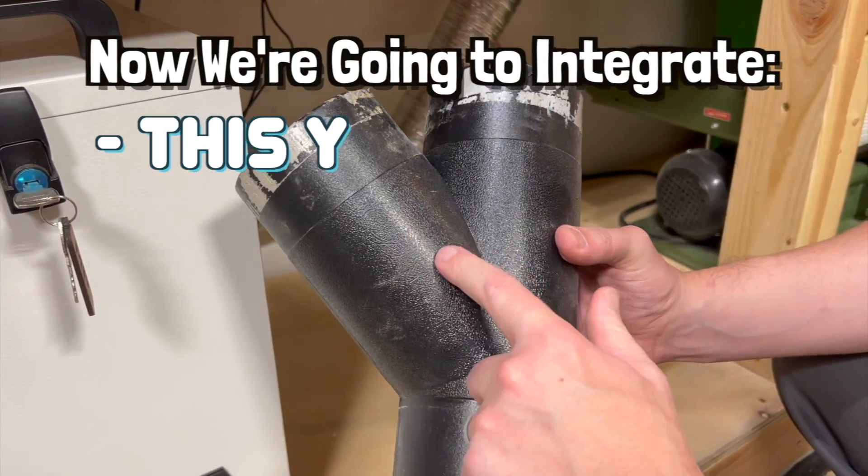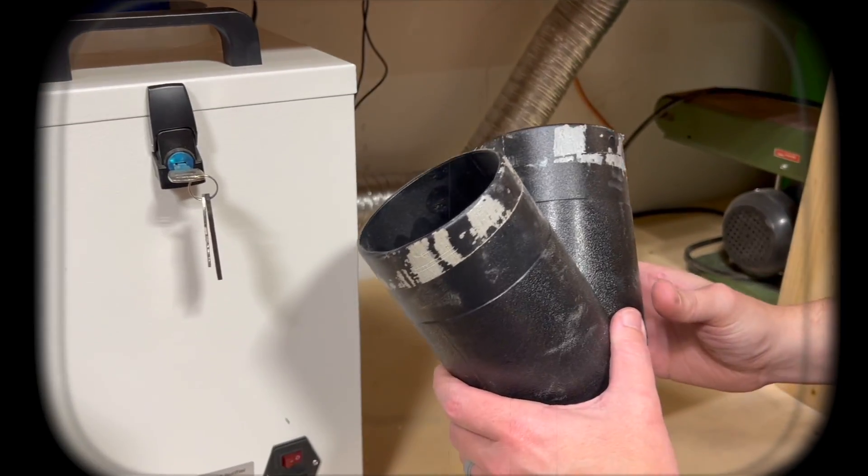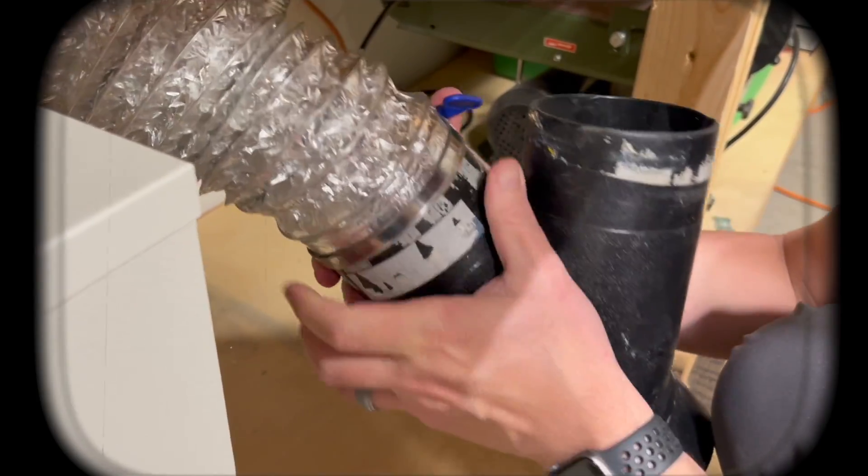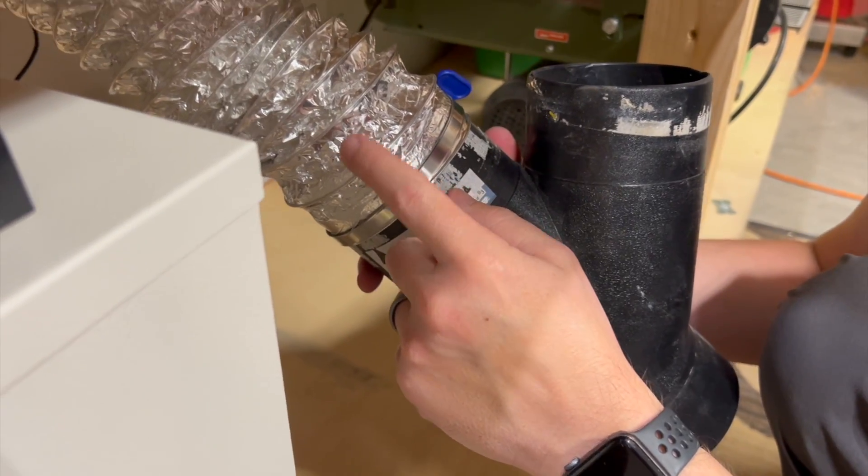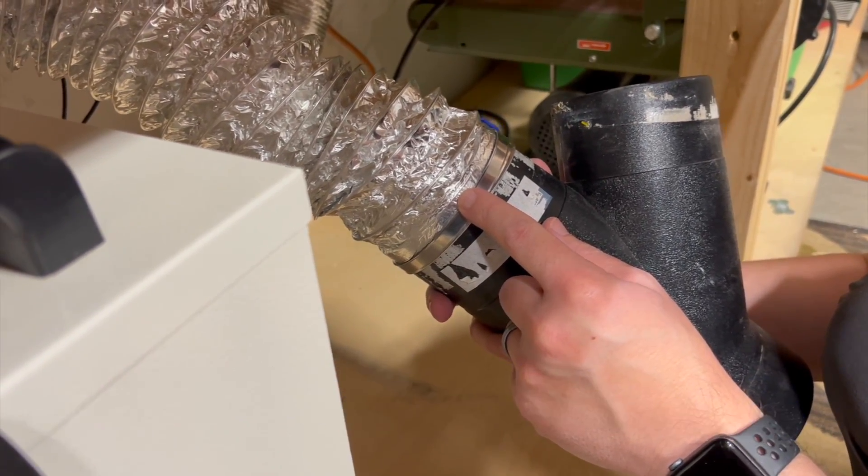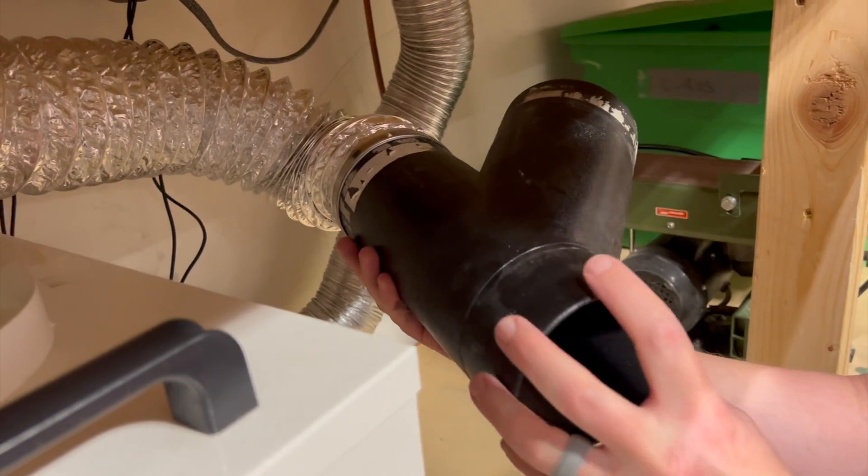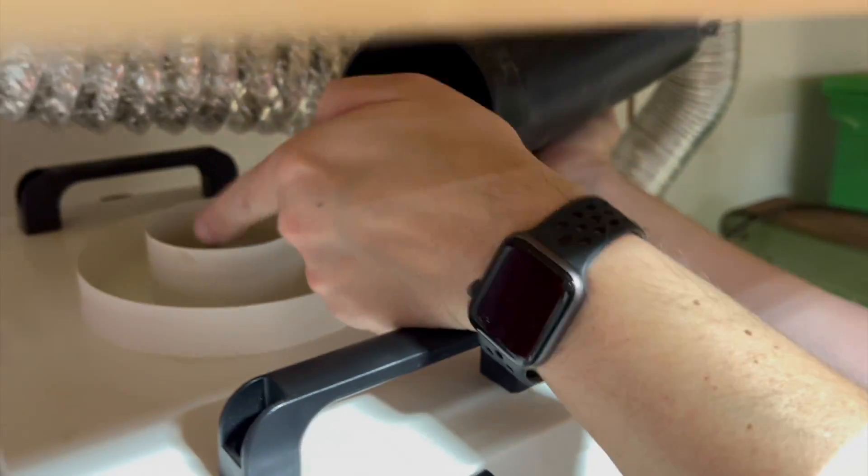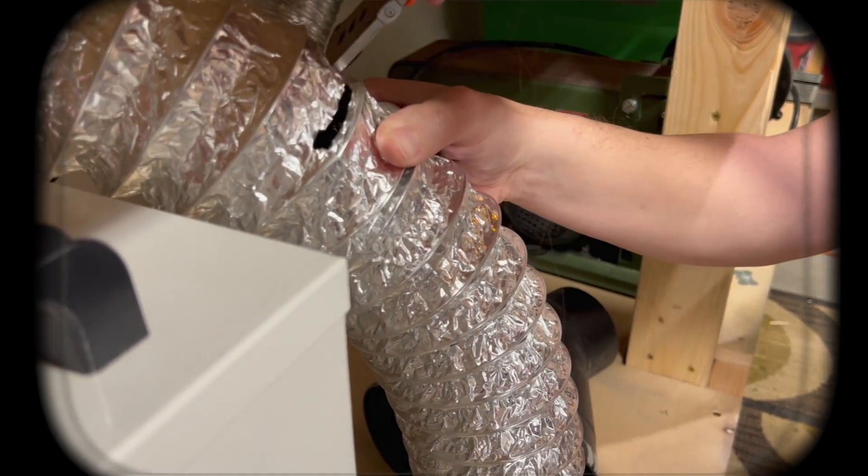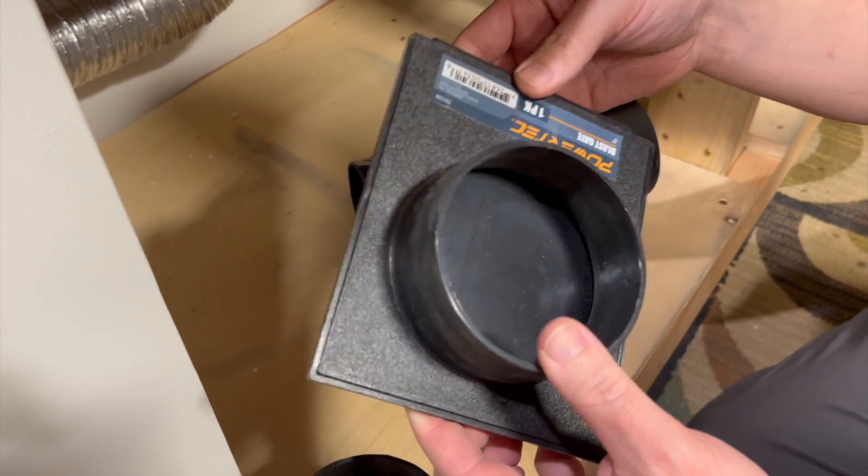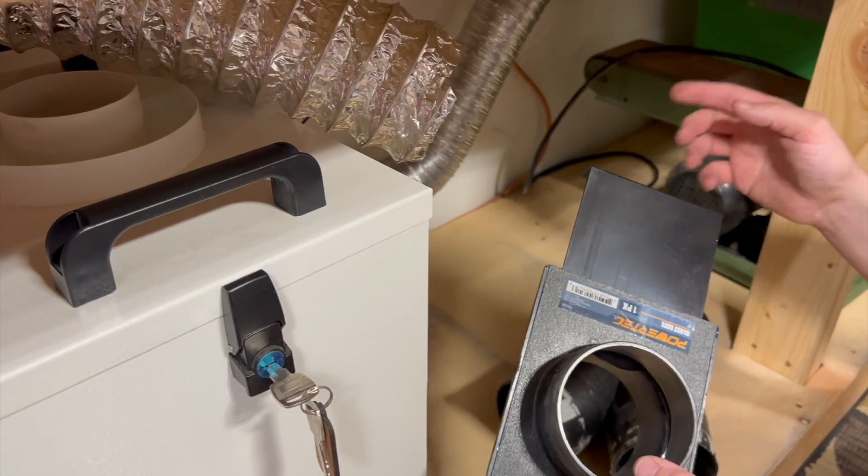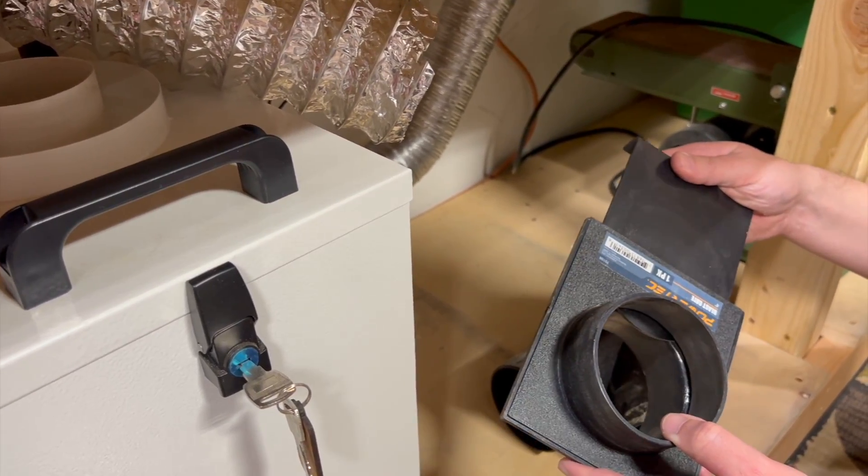Now we're going to integrate this Y and some shutoff valves so we've got to figure out how we want to route this. I'll be able to use this dryer ducting which will make it a little bit easier but I do need to cut some of this off so I can connect this to this because this won't stand up in here and I need to do kind of an angle. So I'm going to integrate these shutoff valves into this so that we can shut off the backing to one of the lasers at a time so I got to figure out how I want this mounted.